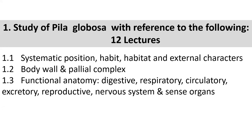Which class of Mollusca does the snail belong to? Mollusca has five classes: Monoplacophora, Polyplacophora, Scaphopoda, Gastropoda and Pelecypoda. Oyster belongs to Pelecypoda, octopus and squid belong to another class, and the snail belongs to Gastropoda. Gastro means stomach and poda means legs. It is not that legs are found on the stomach, but they crawl or creep on their stomach - that's why it is called Gastropoda.